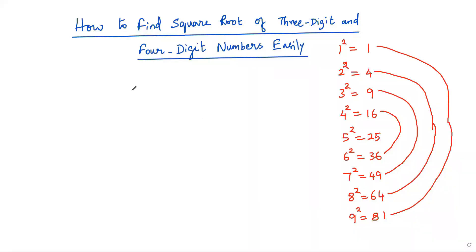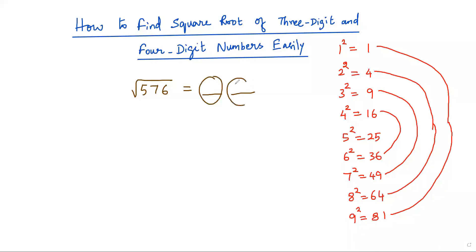Now let us find the square root of a 3-digit perfect square. Consider √576 — since 576 is a perfect square, the result is a two-digit number.